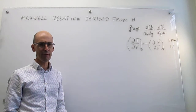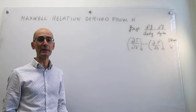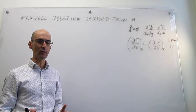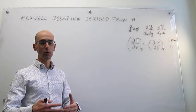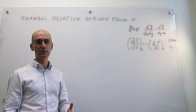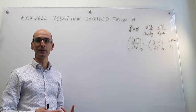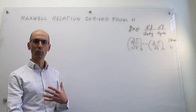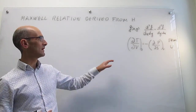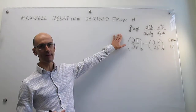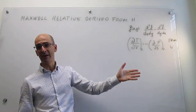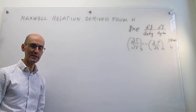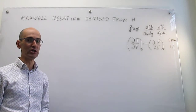We don't have a thermodynamic equation yet for enthalpy, but we're going to derive the right one. Once we have that thermodynamic equation for enthalpy, we will compare it to the total differential of the enthalpy with respect to the natural variables, and then we will work out the second derivatives, exploiting the fact that enthalpy is a state function, and that will give rise to our Maxwell relation. Let's go through each one of those steps in turn.